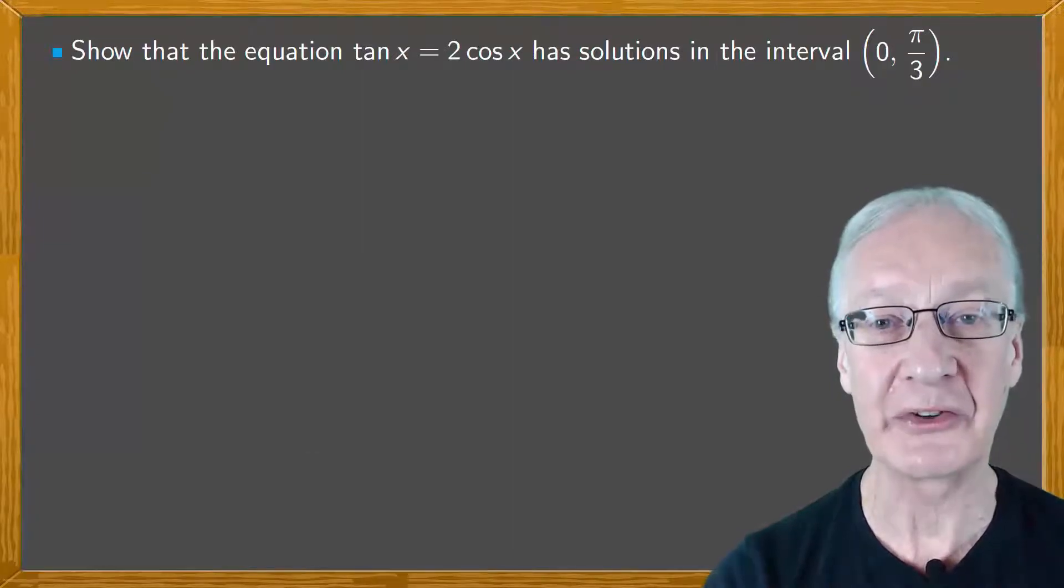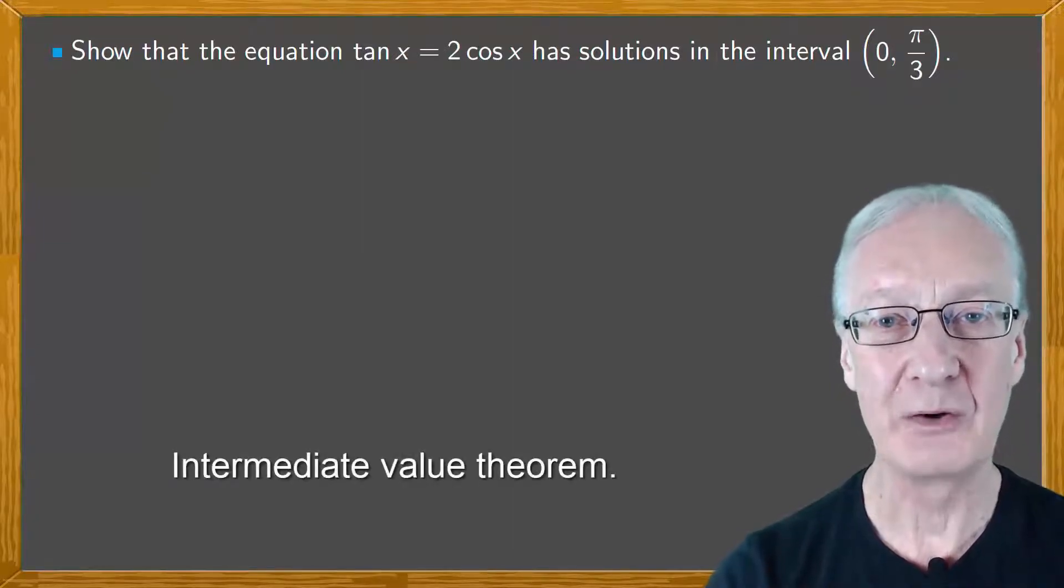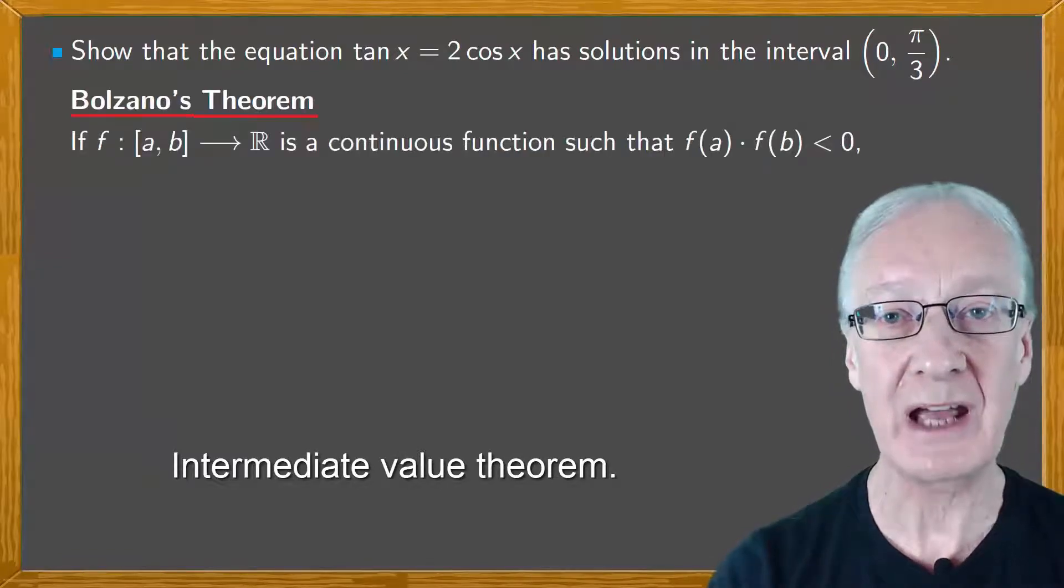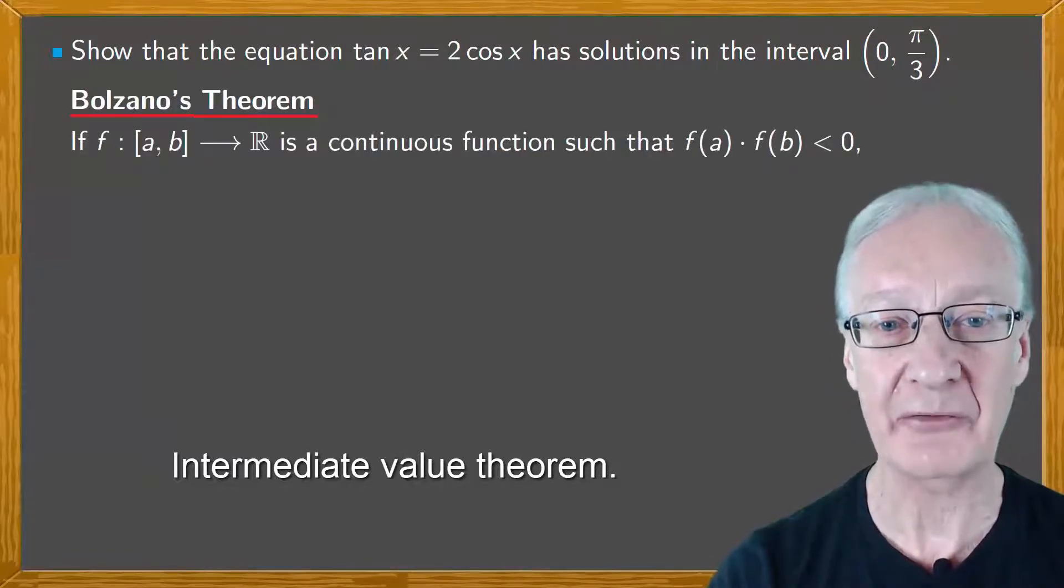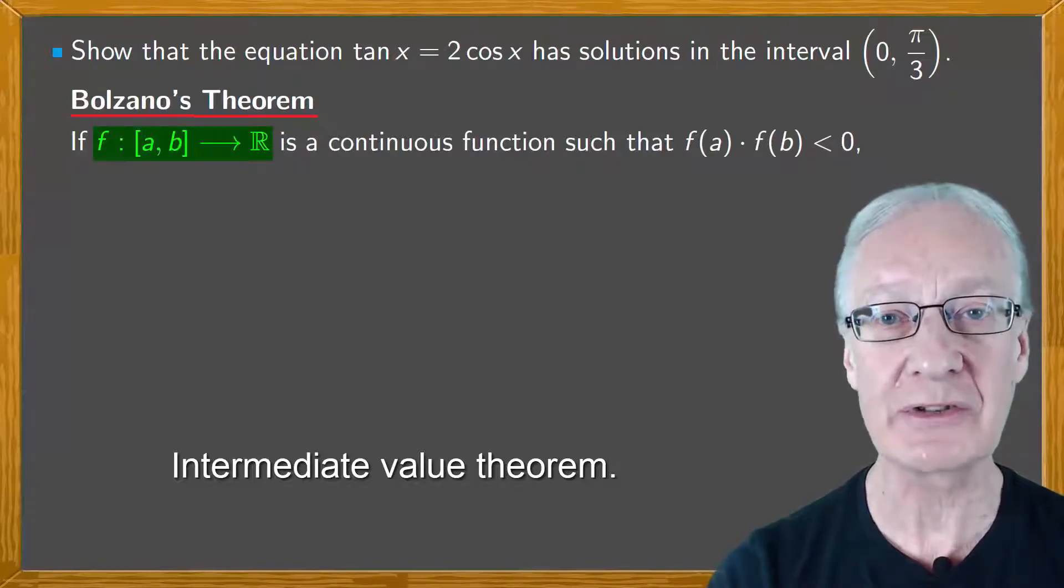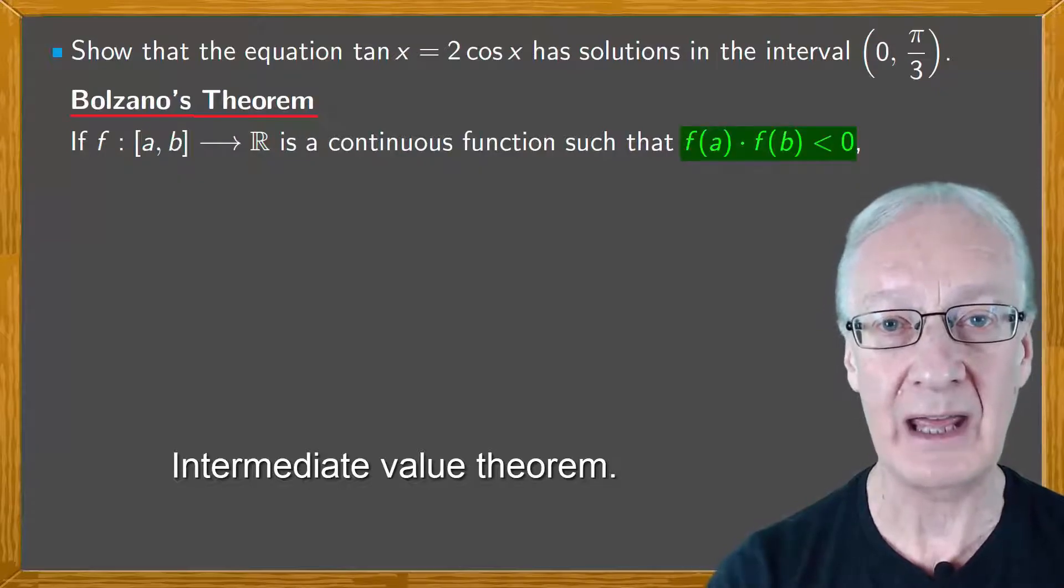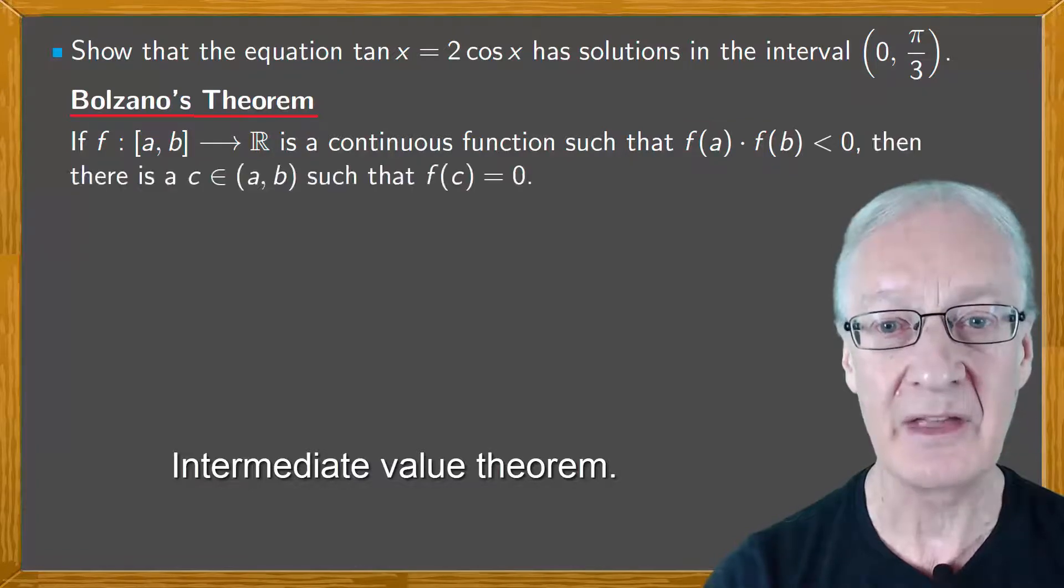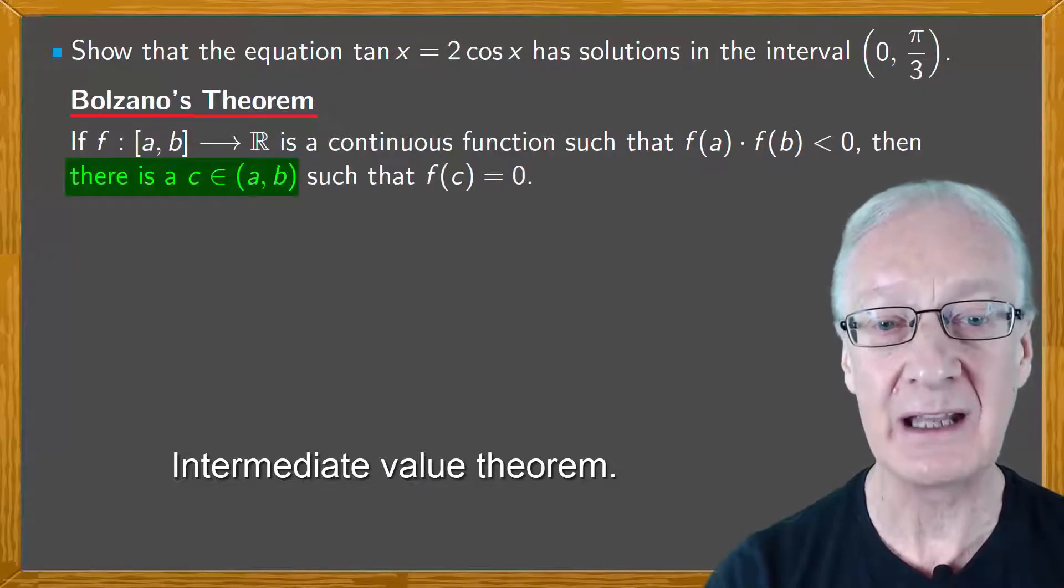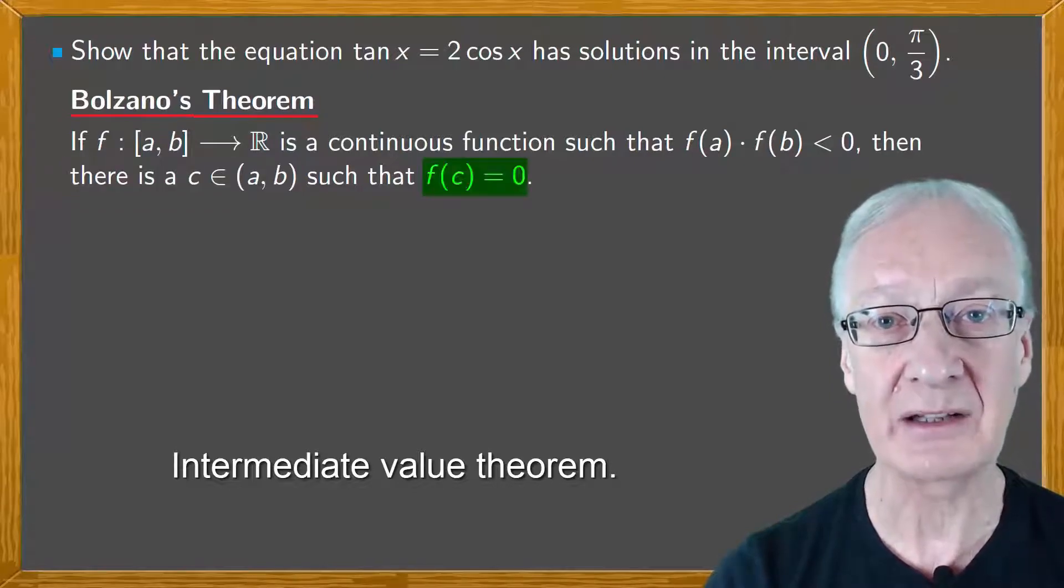Remember that Bolzano's theorem says that if we have a continuous function f defined on a closed interval [a,b] in R, such that f(a) times f(b) is less than 0, then there is a c in the open interval (a,b) such that f(c) equals 0.